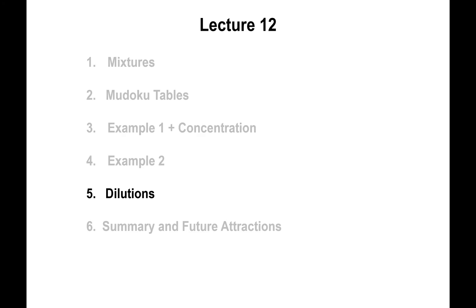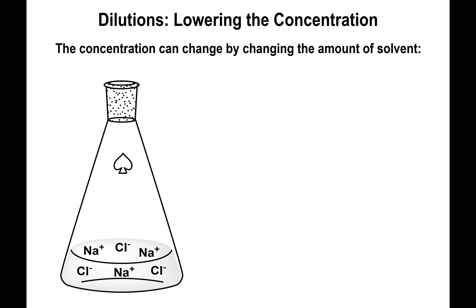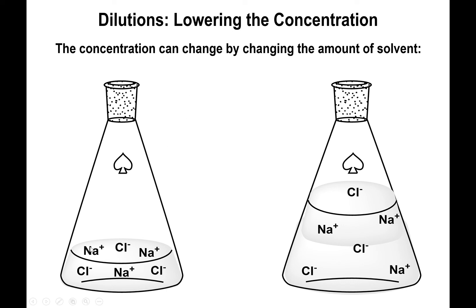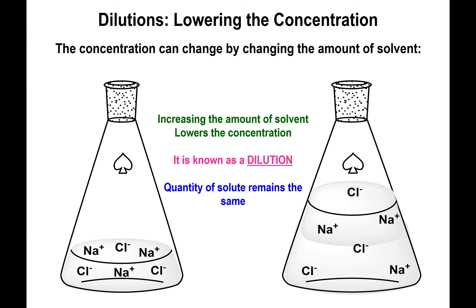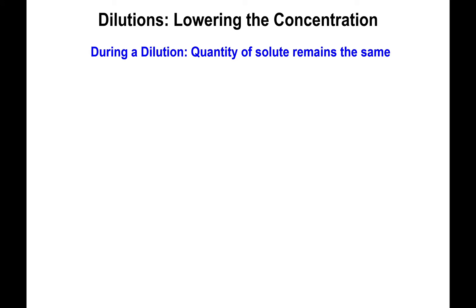Now the last part of this lecture involves a topic known as dilutions. A dilution is simply a means by which you can lower the concentration of a solution. The idea is this: you could change the volume of the solution by adding more solvent. You will be increasing the amount of the solvent, but you will be lowering the concentration at the same time because you will change the total volume of solution. This is known as a dilution. The quantity of the solute will remain the same, but the volume is changing, so you will ultimately decrease the concentration.